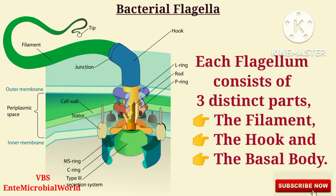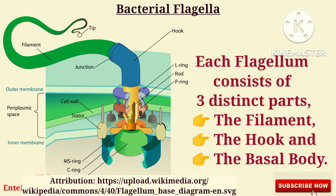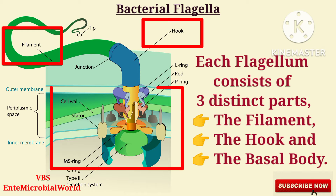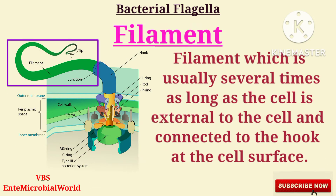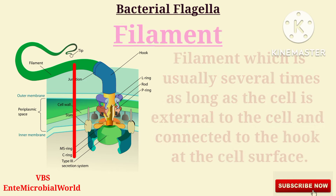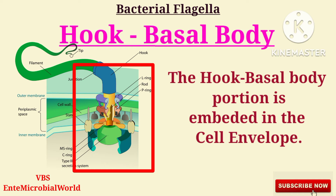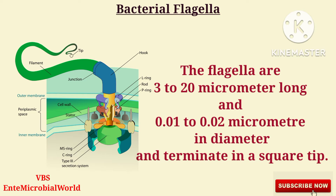Each flagellum consists of three distinct parts: the filament, the hook, and the basal body. The filament, which is usually several times as long as the cell, is external to the cell and connected to the hook at the cell surface. The hook-basal body portion is embedded in the cell envelope.